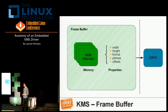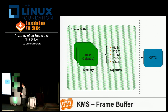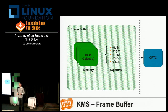A frame buffer can be more complex than a single piece of memory. Depending on the video format, you can have several pieces of memory — for example NV12, where you have one piece of memory with Y data and another with Chroma data, making two separate memory areas. The frame buffer in the KMS model has properties: a size, a pixel format, pitches, offsets, and importantly, the memory objects used to create it. You can have a single memory object or multiple — there's support for up to four in the frame buffer API.